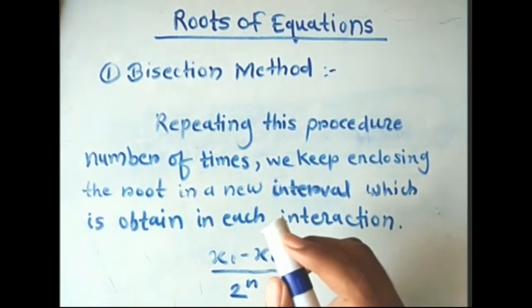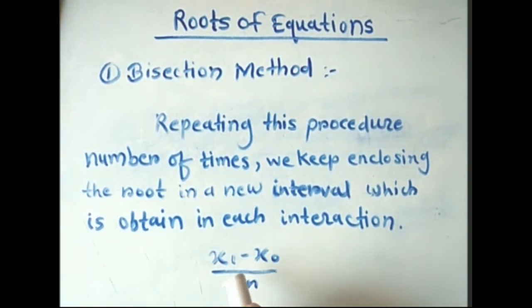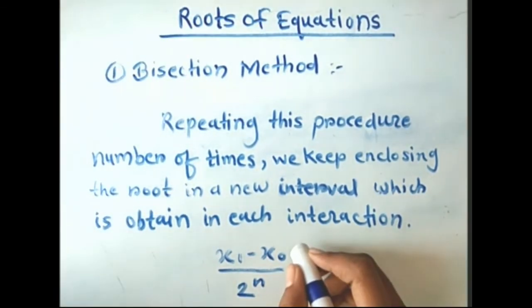After repeating the process n times, the interval obtained is reduced in length to (x₁ - x₀)/2ⁿ. In the next session, we will discuss an example of the bisection method. Thank you.